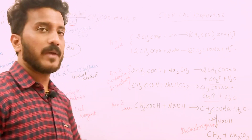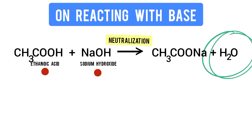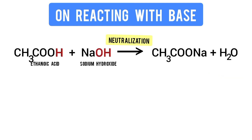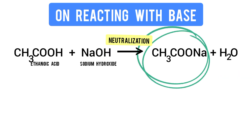How does Ethanoic Acid react with a base? CH3COOH reacts with NaOH. Whenever an acid mixes with a base, a neutralization reaction occurs — water is formed, and H from the acid combines with OH from the base to give H2O. Na replaces H, and it becomes CH3COONa — Sodium Acetate.